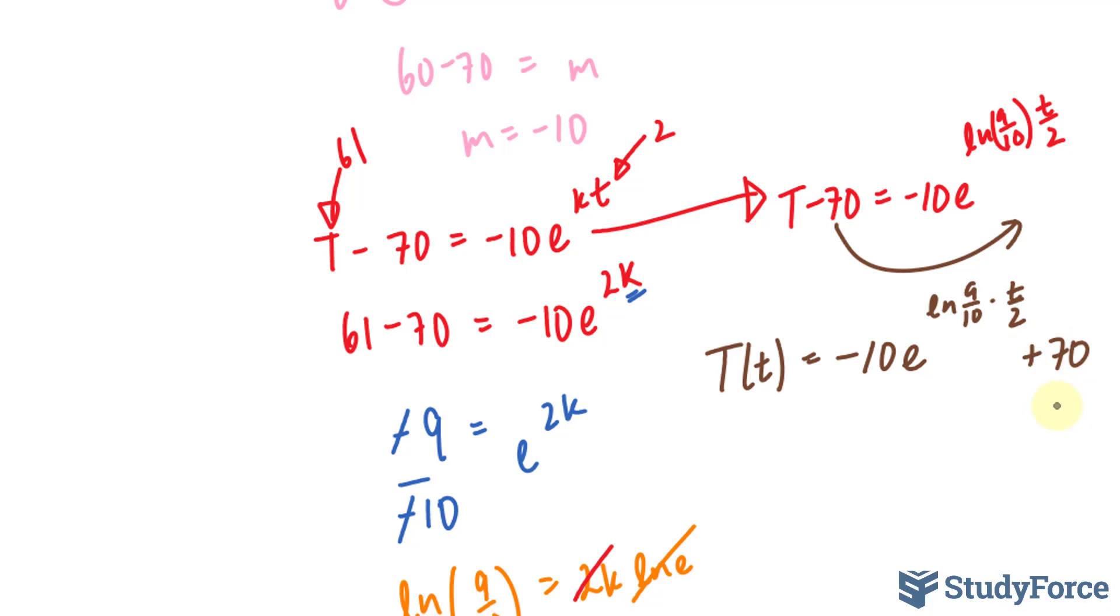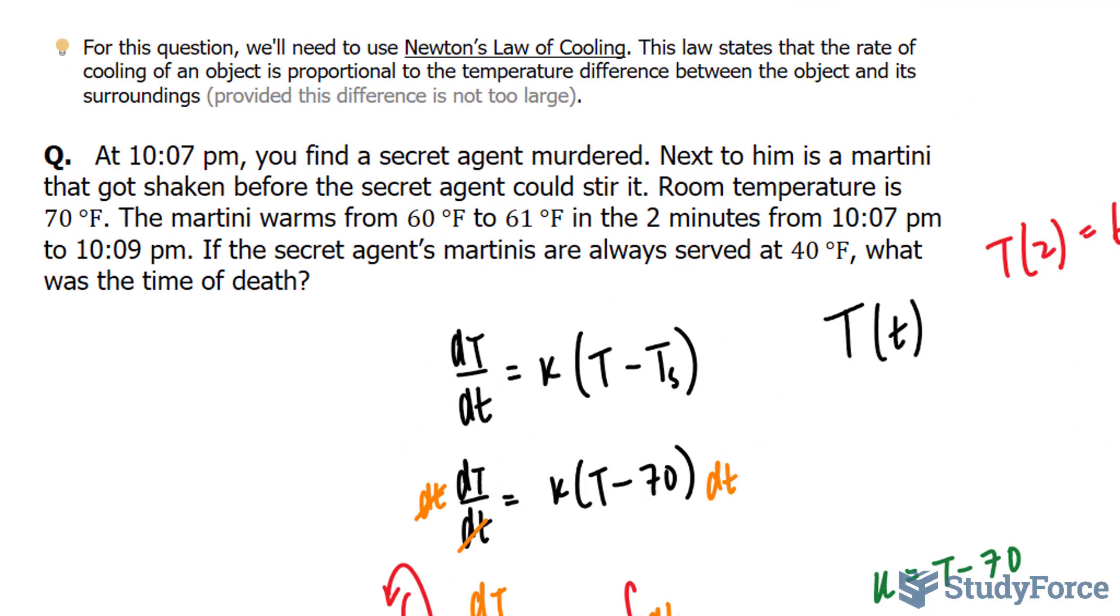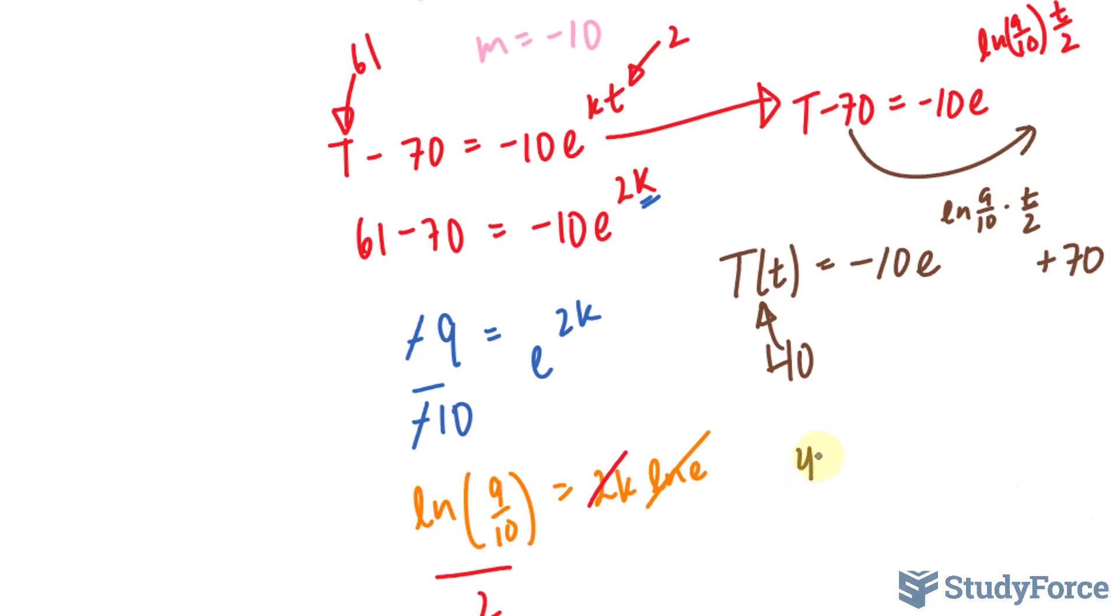I can use this equation now to solve the problem. Because we're told that the secret agent likes his martini served at 40 degrees Fahrenheit. If I substitute 40 degrees Fahrenheit into here, I can find out what t is. And I can use my findings, the time, to check how many minutes before or after 10:07 this agent was murdered. Here's what I mean. So I have 40 is equal to -10e^(ln(9/10) * t/2) + 70.